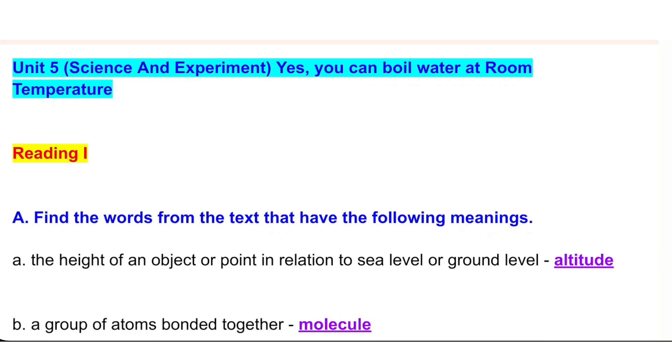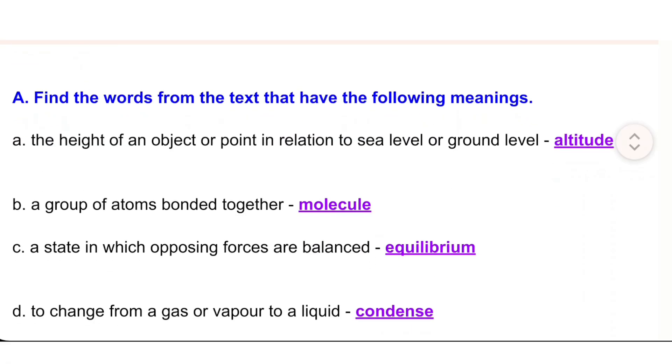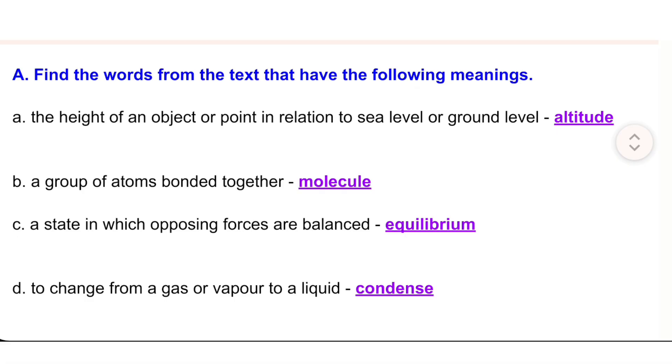Unit 5: Science and Experiment. Yes, you can boil water at room temperature. Reading I. Find the words from the text that have the following meanings: a) the height of an object or point in relation to sea level or ground level - altitude. b) a group of atoms bonded together - molecule.